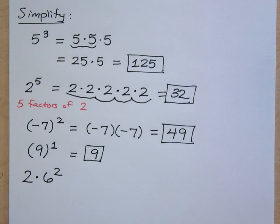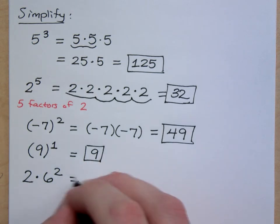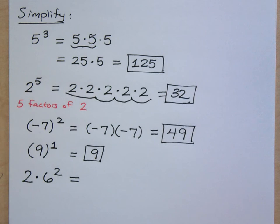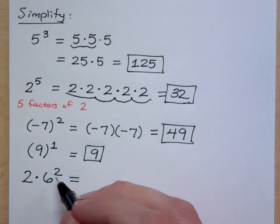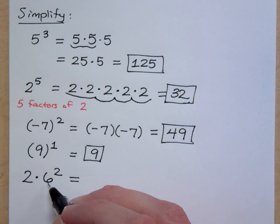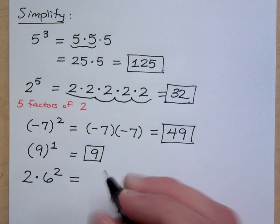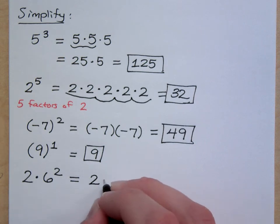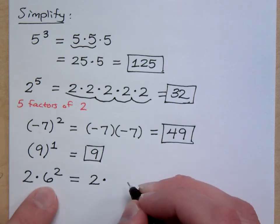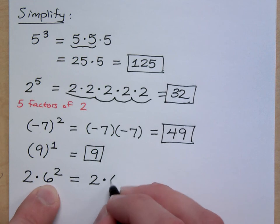What if I look at this: 2 times 6 squared. Do you see the exponent? What is the exponent attached to? The exponent is attached to the 6. Is this 2 connected to this 2 out here in front? No. So I still have a 2, but this is 2 times... how can I rewrite this to help me? 6 times 6.